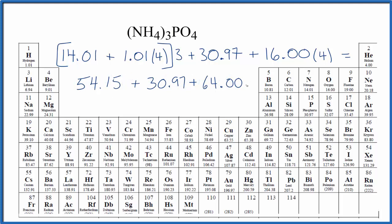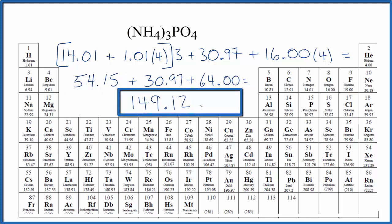And we add these numbers up, we get 149.12 grams per mole. That means if we had 149.12 grams, that would give us one mole of our ammonium phosphate. If we had one mole, we'd know that the molar mass, the mass of one mole, would be 149.12 grams.